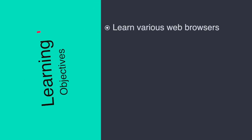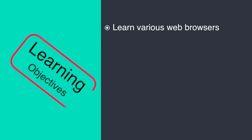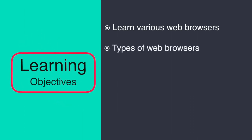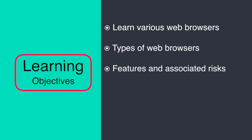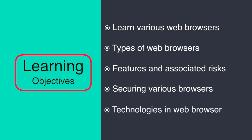In this module, we will first learn about a little background about web browsers. We will also see what are the types of existing web browsers, discuss their features and the risks associated with each web browser. Then we will learn about security measures for securing these web browsers, the list of various menu items, and the various technologies used in web browsers.